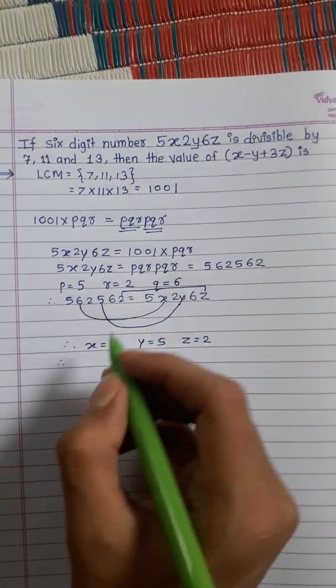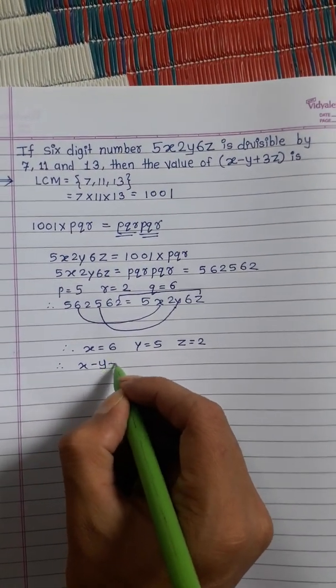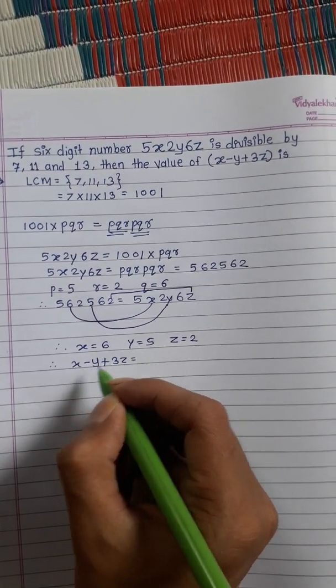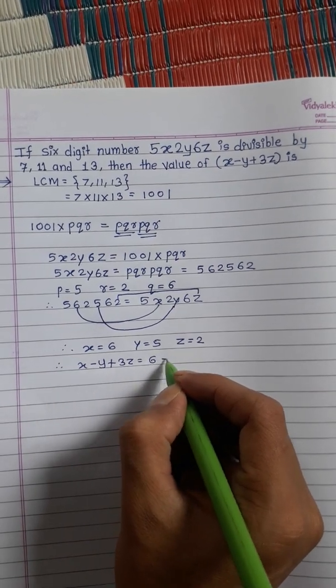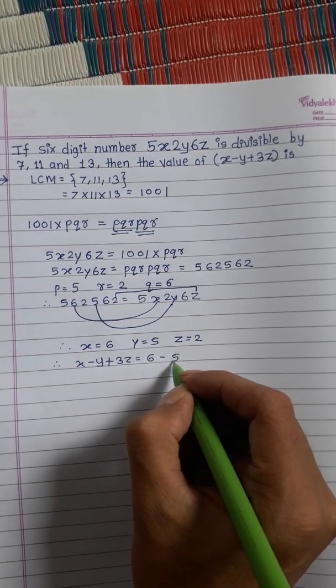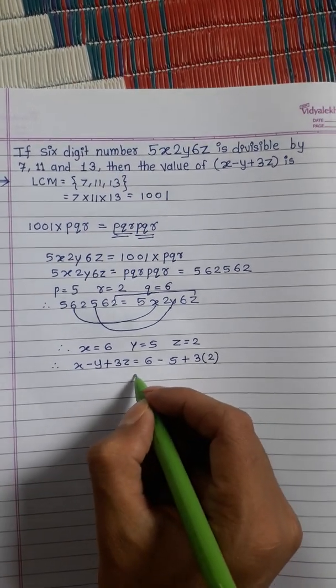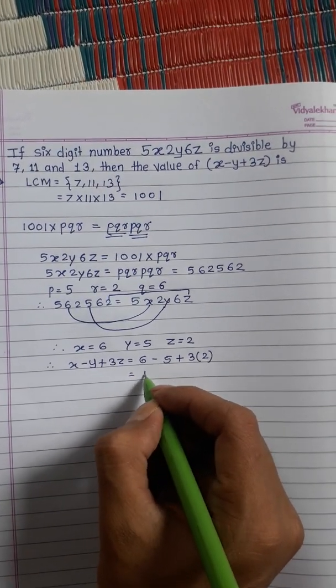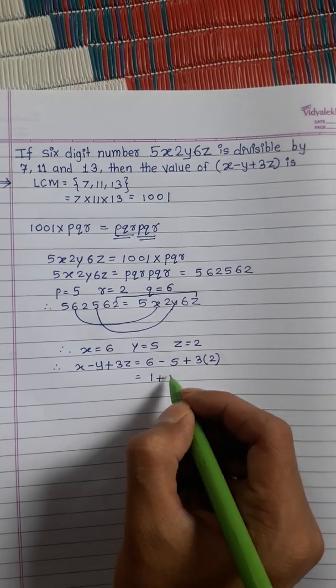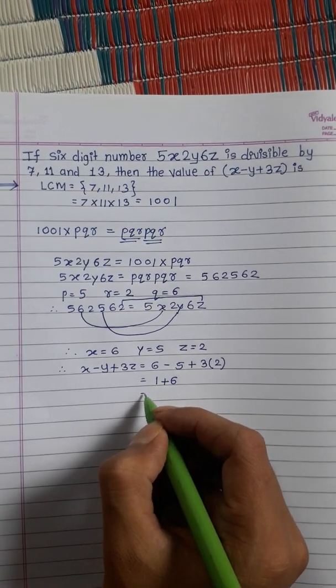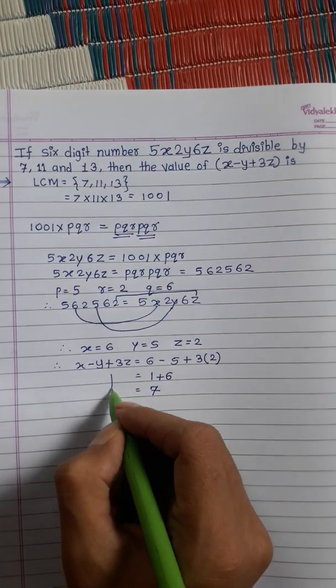Now we calculate x - y + 3z. Substituting the values: 6 - 5 + 3(2) = 1 + 6 = 7. Therefore, the answer is 7.